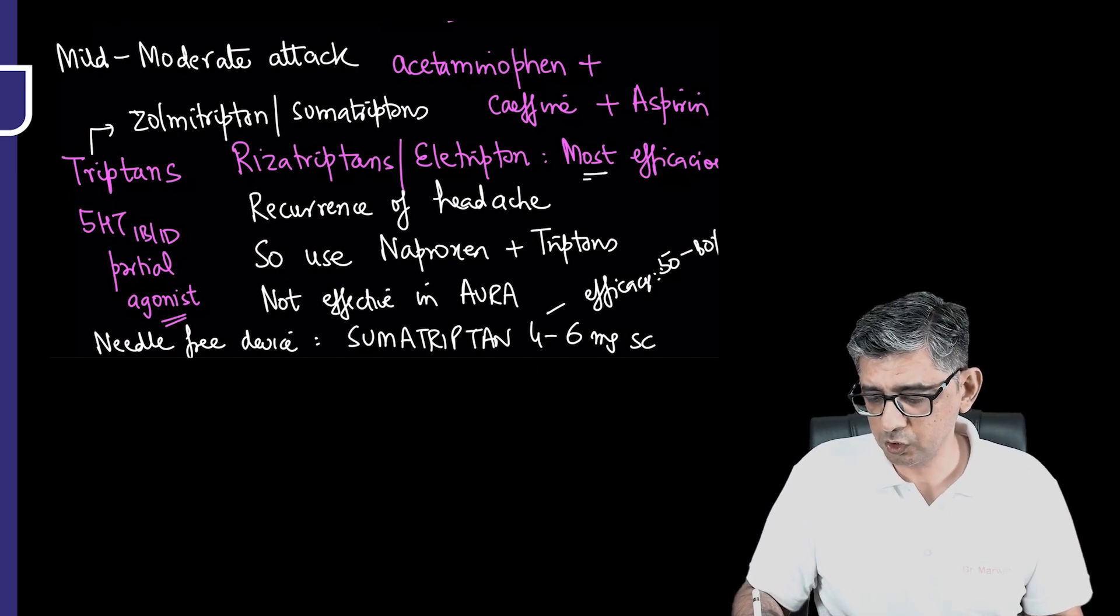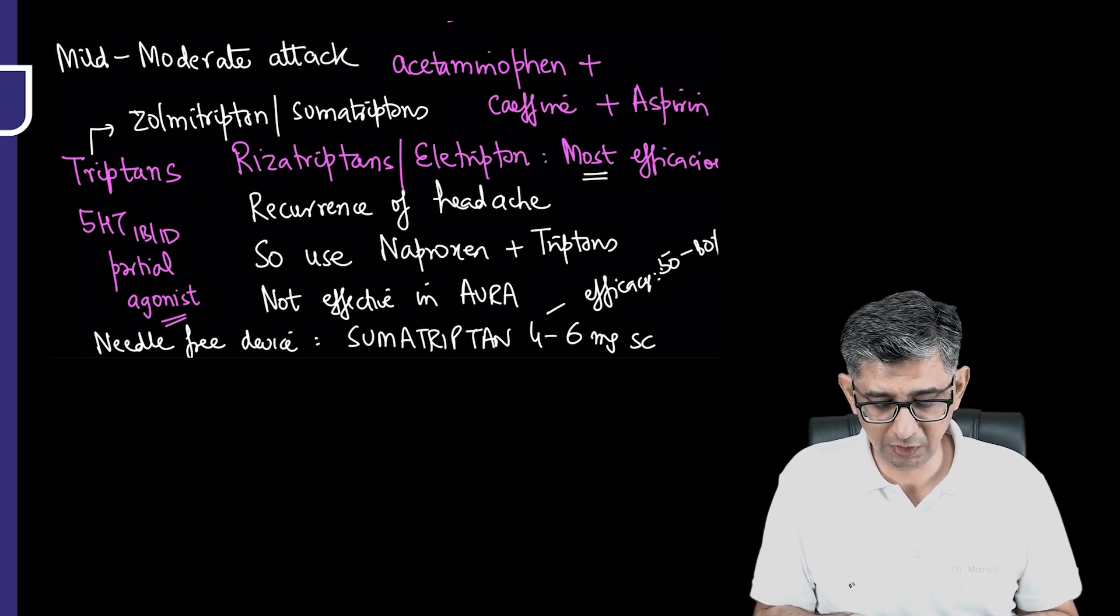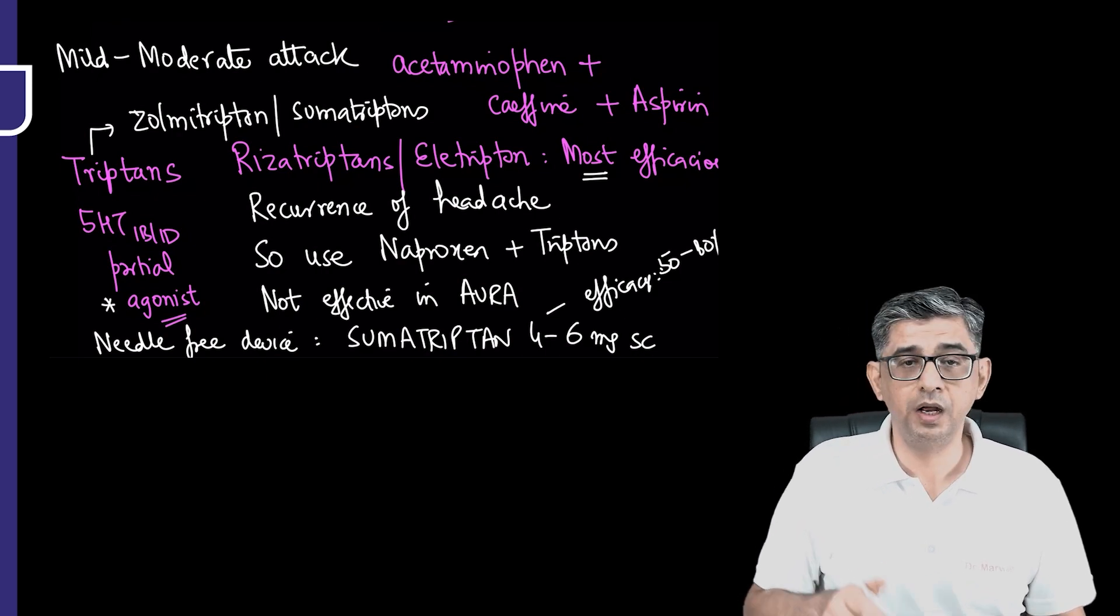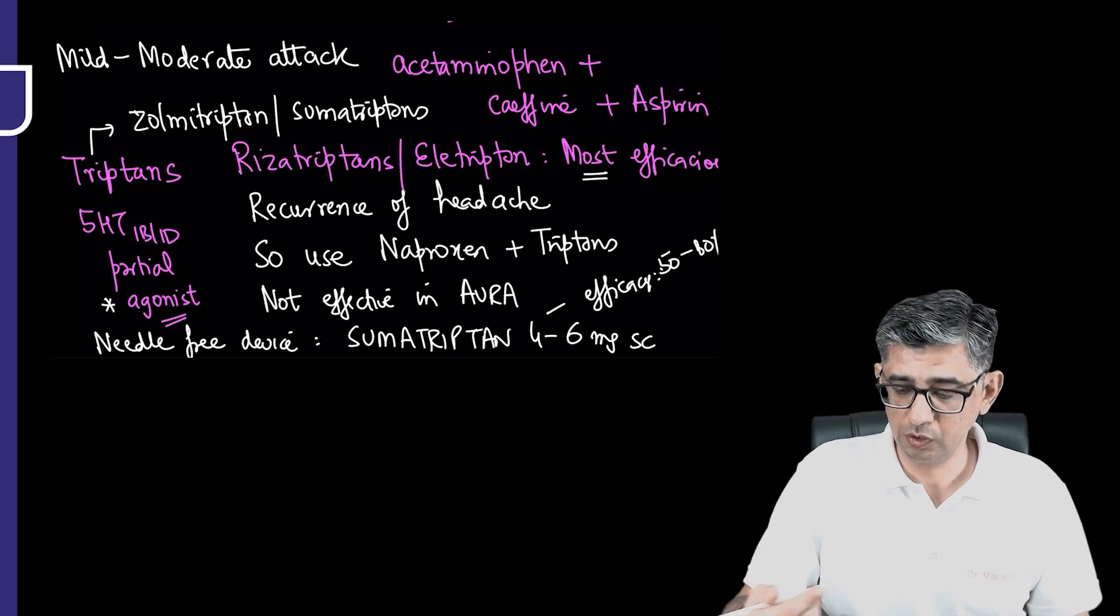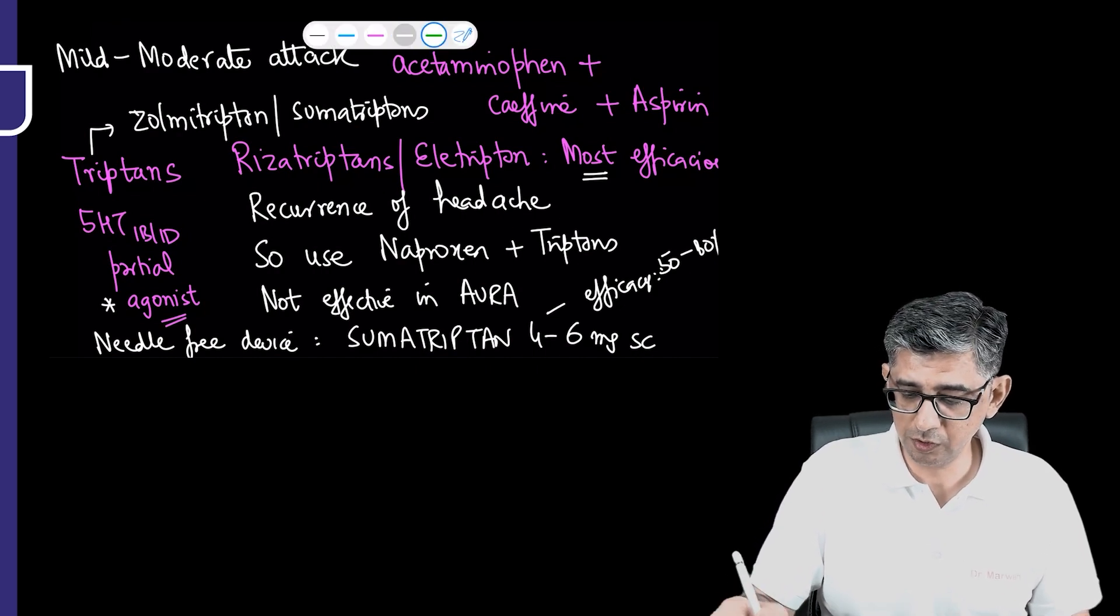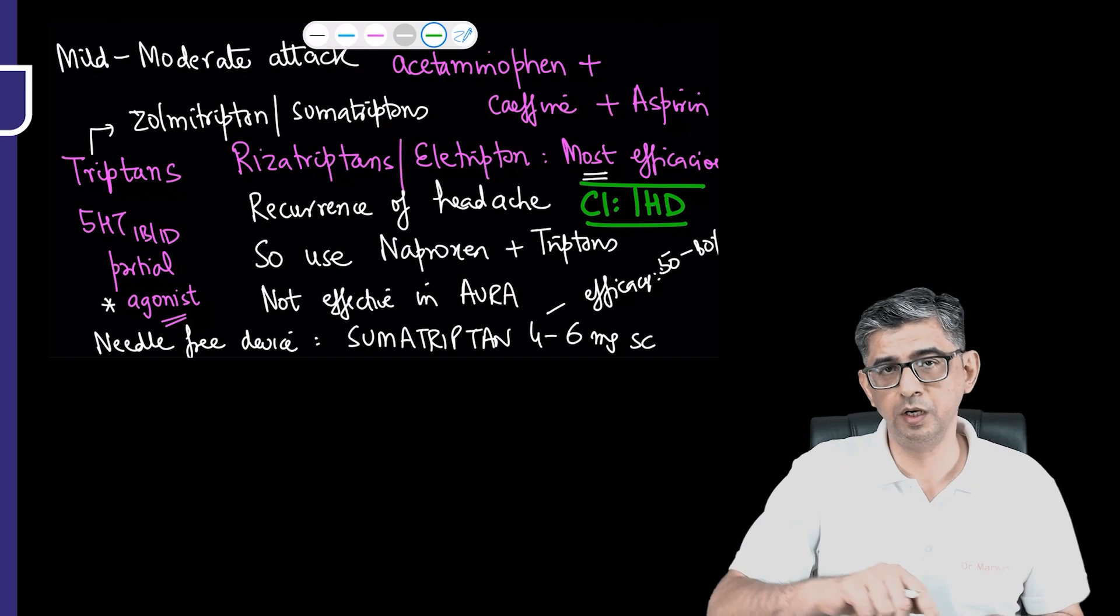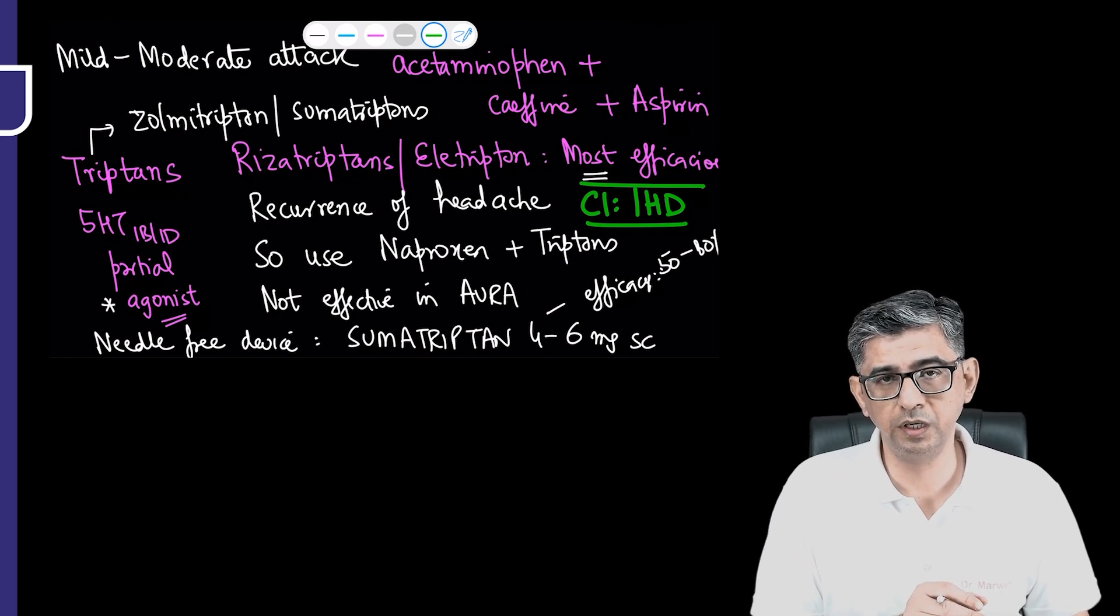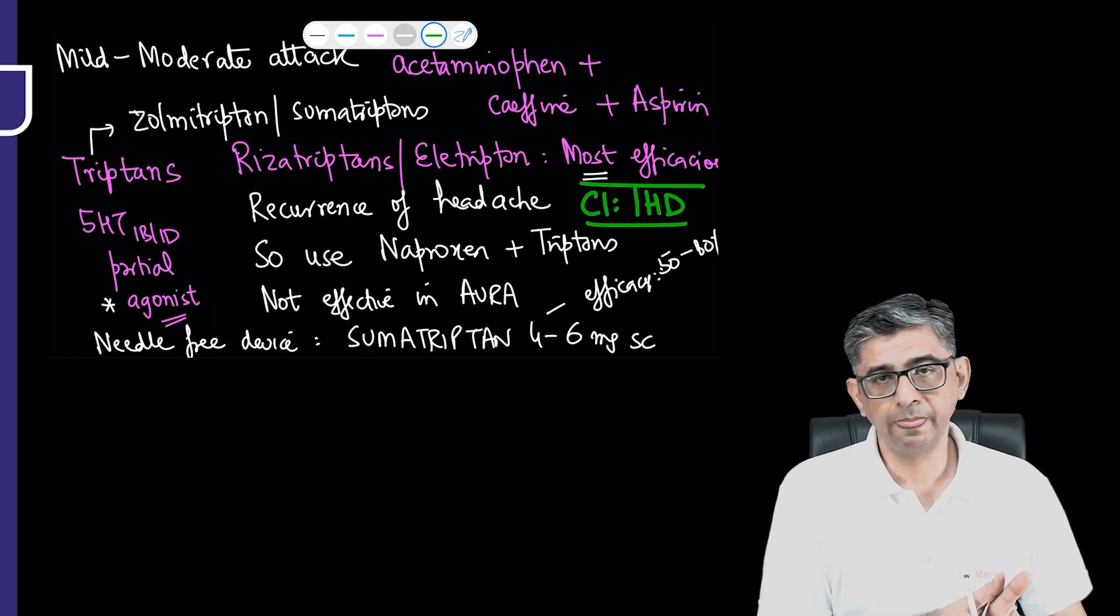Most of the time, either he'll ask you about the most efficacious one or about the mechanism of action, which is that it is a partial agonist. These drugs would not be recommended because they're causing a vasoconstriction, so these drugs would not be recommended in patients who are having ischemic heart disease. We will discuss subsequently about a category which can be used even in migraine patients with concomitant ischemic heart disease.